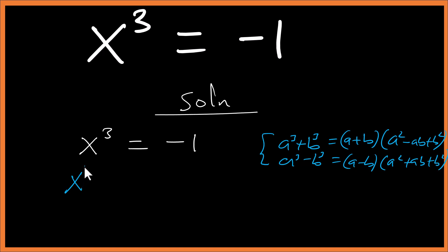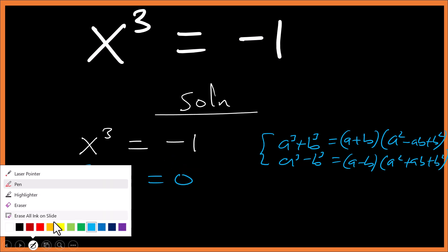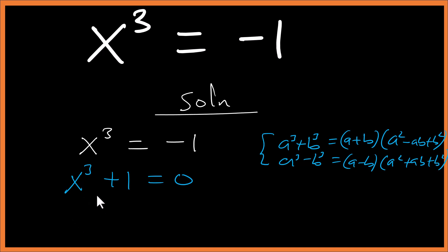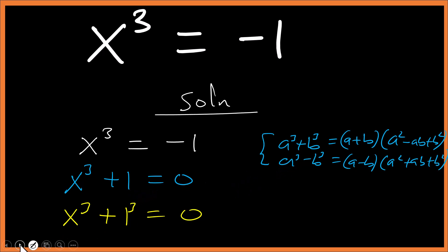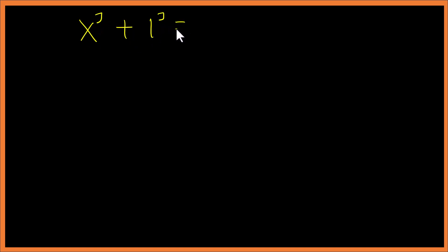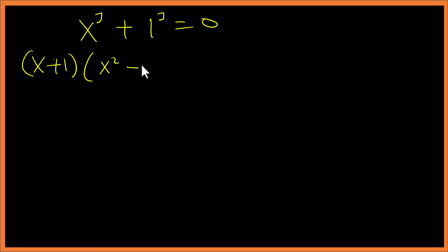We have these identities. Now let's rewrite x cubed equals negative one as x cubed plus one equals zero, by adding one to both sides. From here we can write this as x cubed plus one cubed equals zero, remembering that one cubed is still one.